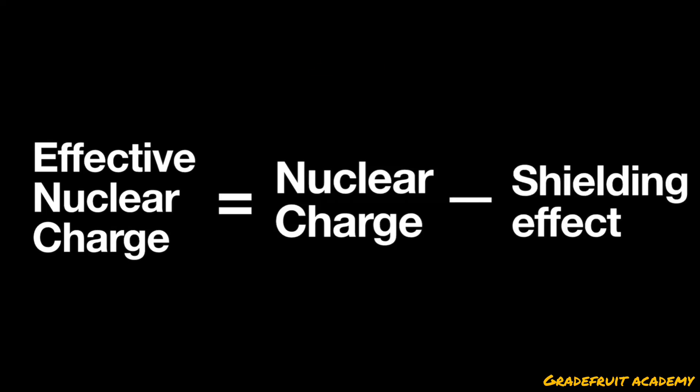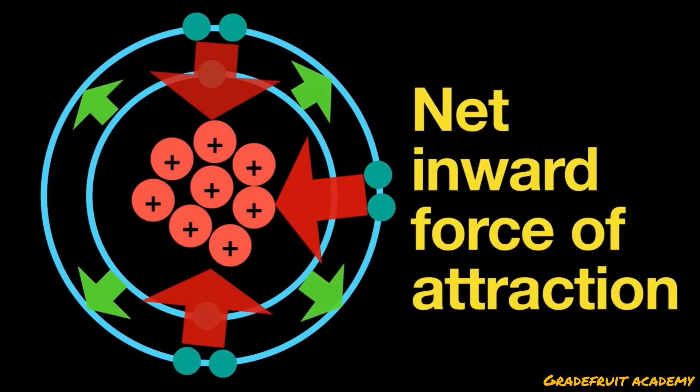So if the nuclear charge is greater than the shielding effect, the effective nuclear charge increases and there will be a net inward force of attraction between the nucleus and valence electron as it is stronger than the shielding effect between the electron shells.